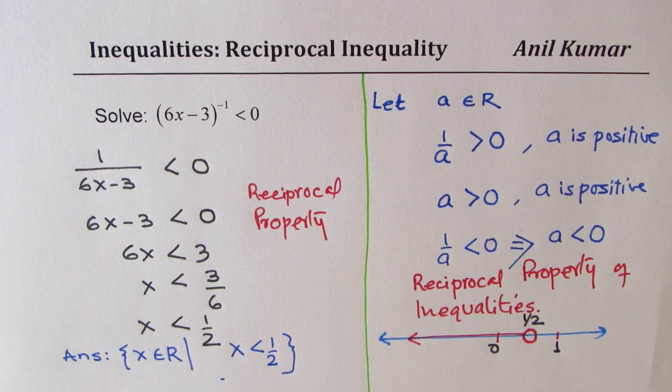So I hope these steps are absolutely clear and the concept that if reciprocal is positive, then the number itself should be positive. If reciprocal is negative, then the number itself should be negative. And that is a very important property which should be utilized to solve such questions.